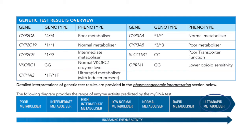On the far right we have ultra rapid metabolisers. For these people their enzyme is either working very quickly or there is a larger amount of enzyme. In that case, for most medication it will be cleared out of their body much more quickly than most people.